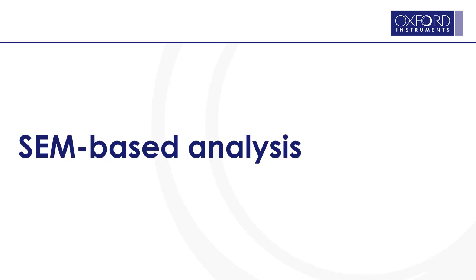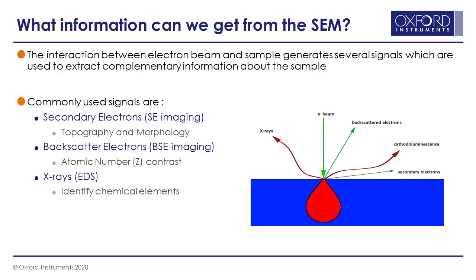SEM-based, or scanning electron microscopy-based, analysis — what information can we get from the SEM? In the SEM we have an electron beam that is focused onto the sample surface, and the interaction between the electron beam and the sample generates a range of signals which we can use to extract information about the sample. Some of the most commonly used signals are secondary electrons — electrons knocked off the sample that give us information about topography and morphology — and high-energy backscattered electrons, which have interacted with the nucleus and thereby give us atomic number contrast, showing where we have density variations, heavy elements, and light elements. The interaction also generates X-rays that are characteristic for the elements in the sample, and by detecting and analyzing those X-rays we can get information about the chemical elements present.